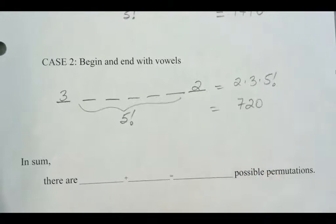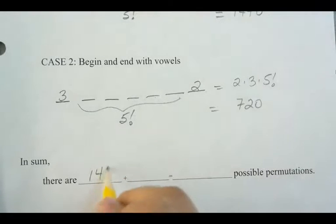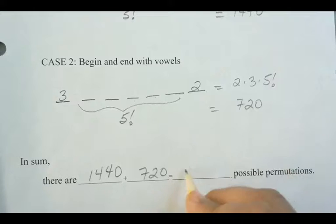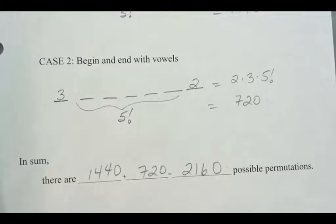Now, to sum up everything, I do exactly that. I sum it. I add them together. So 1,440 plus 720 is going to give me 2,160 possible permutations for arranging it in either them beginning with consonants and ending with consonants, or begin and end with vowels. We're done. Okay?